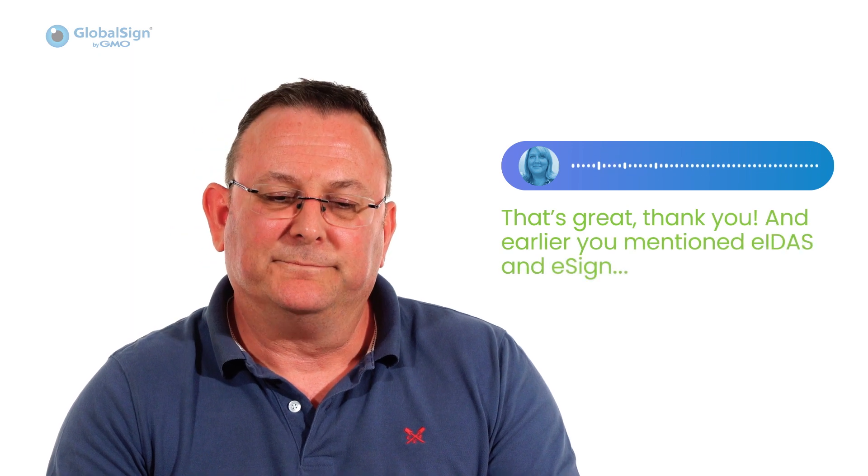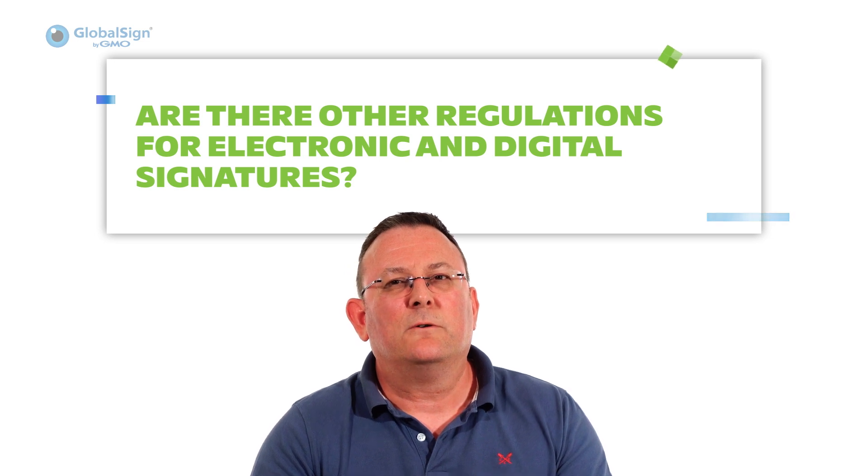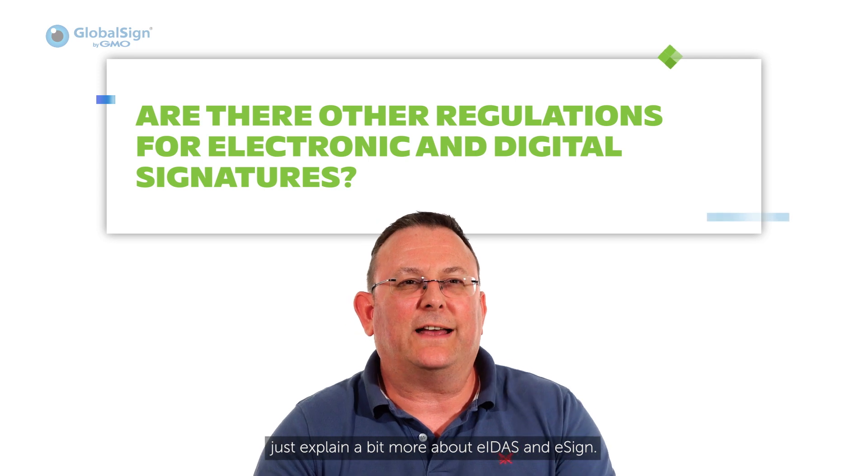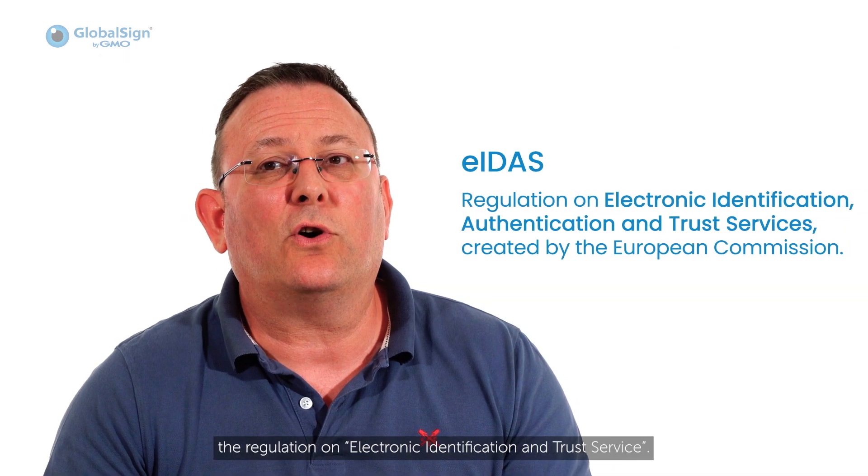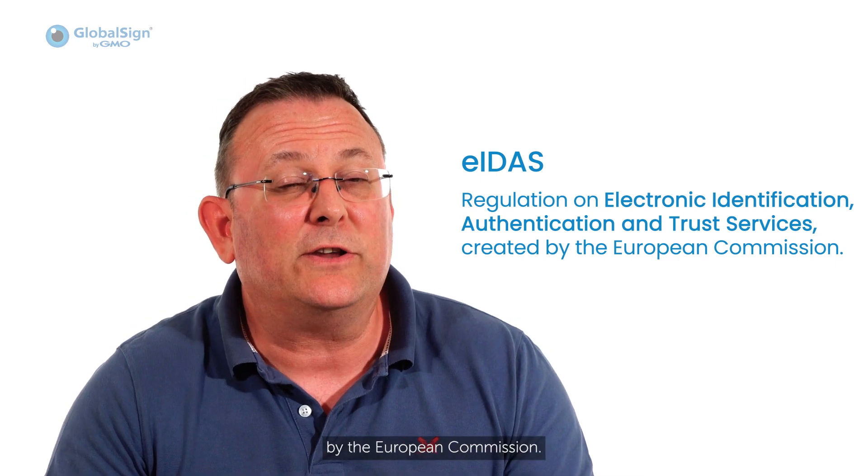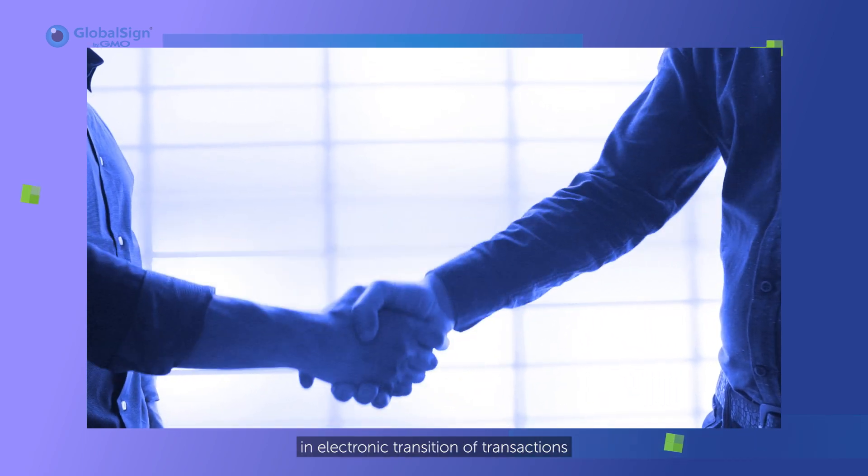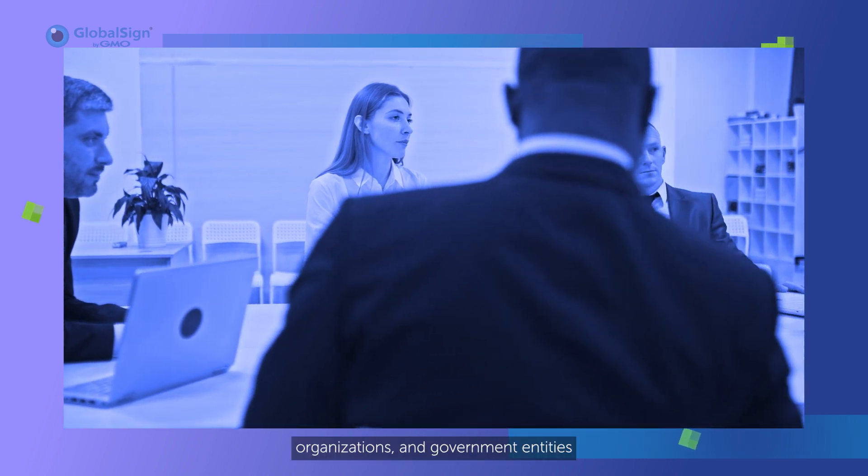And earlier you mentioned eIDAS and eSign. Are there any other regulations around either electronic or digital signatures? There are, but let me just explain a bit more about eIDAS and eSign. So eIDAS stands for the Regulation on Electronic Identification and Trust Services. It was created by the European Commission. It helps establish trust in electronic transactions between individuals, organizations and government entities across the European member states.